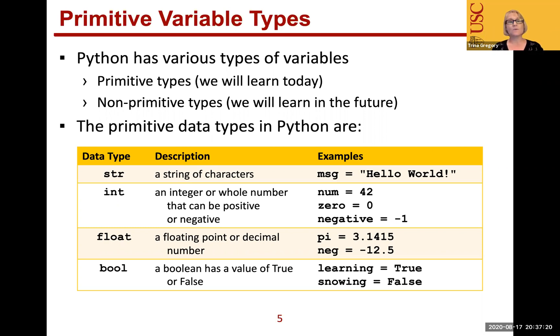Another type is int, which is an integer, or you may remember from math, a whole number. And that whole number can be positive or negative. Some examples might be num equals 42, zero. So I created a variable called zero equals the value zero, and negative equals minus one. Not only do we have whole numbers, we have floating point numbers, and we use that data type as a float. You may also think of it as a decimal point number. Things like pi equals 3.1415, or neg equals negative 12.5. They can be positive and negative as well, and it can be quite long as well.